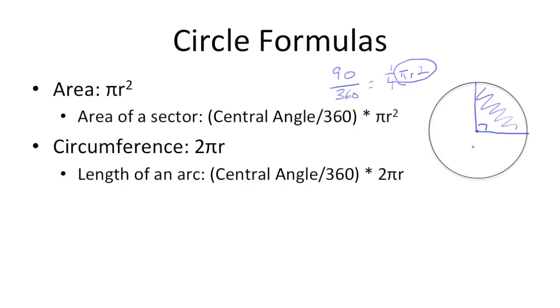To get the length of an arc, just like with the area of this sector, you just need to take the proportion of the circle you're looking for, the central angle divided by 360, times the formula for circumference, 2 pi r.